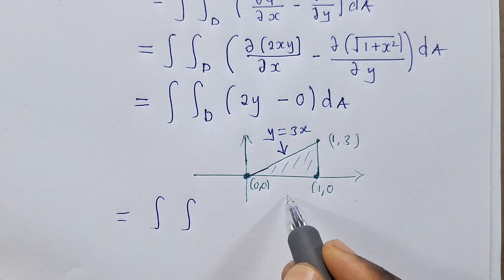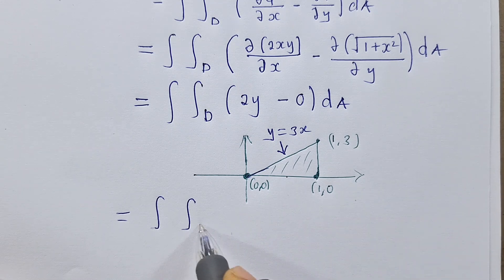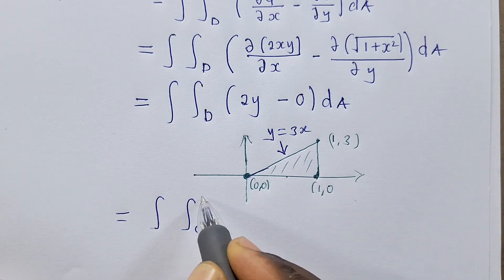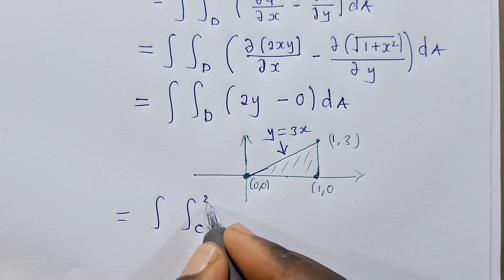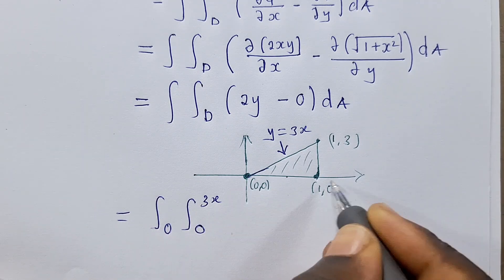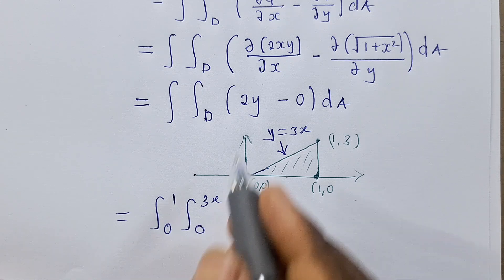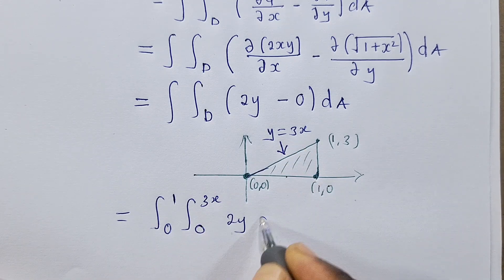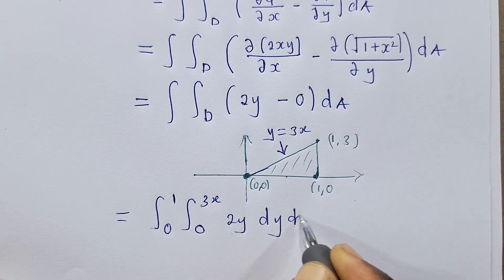Finding the region will be moving in this way. This is 0, here y equals 3x, and then here it's 0 to here it's 1. I've got 2y dy dx.